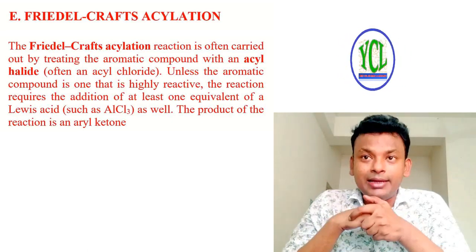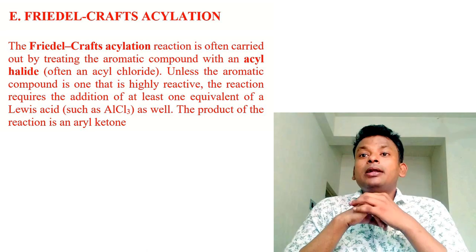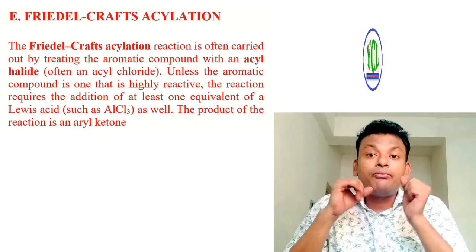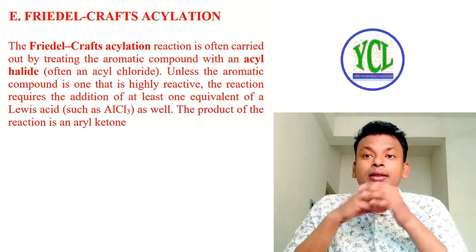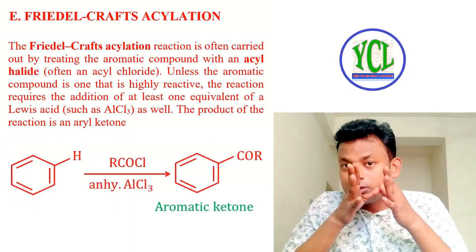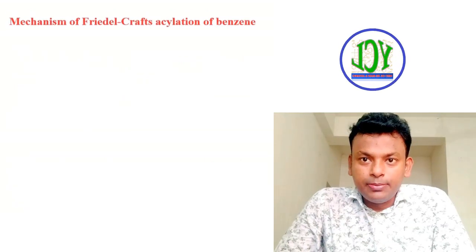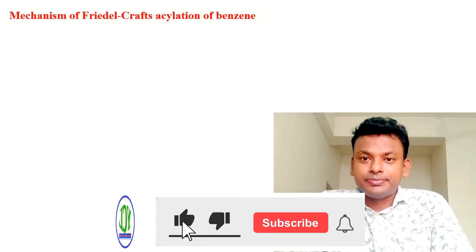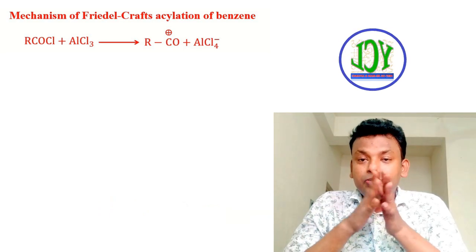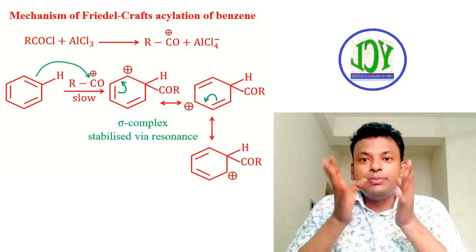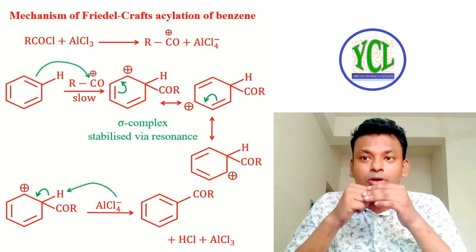Friedel-Crafts acylation: the reaction is carried out by treating an aromatic compound with an acyl halide (CH₃COCl or RCOCl), unless the aromatic compound is highly reactive. The reaction requires at least one equivalent of Lewis acid AlCl₃. The product is an aryl ketone. Reaction: benzene + RCOCl (acyl halide) + anhydrous AlCl₃ → aromatic ketone. Mechanism: RCOCl reacts with AlCl₃ to form RCO⁺ (acylium ion), which as electrophile reacts with benzene to form a sigma complex. AlCl₄⁻ acts as a base and accepts a proton, forming the aromatic ketone.